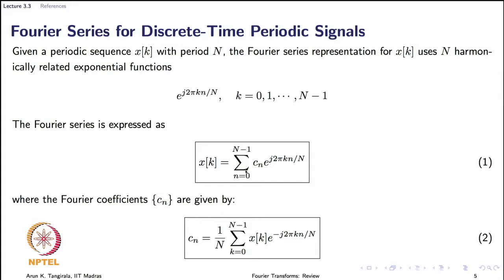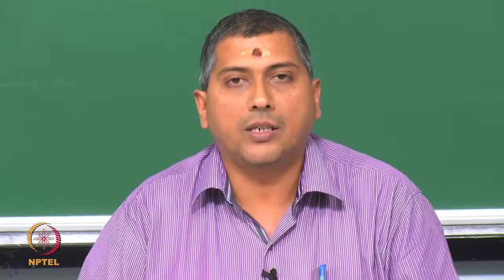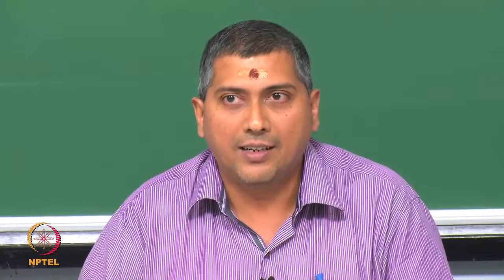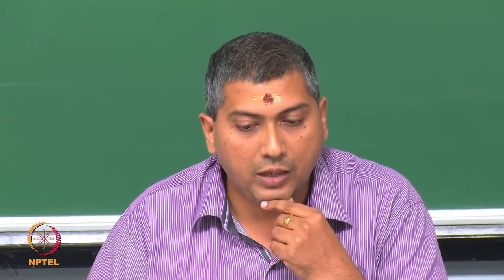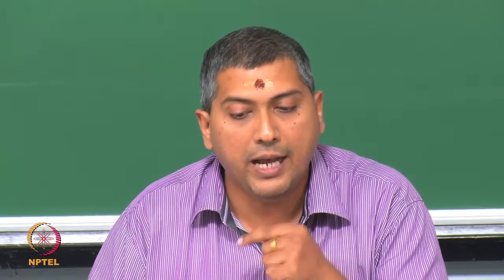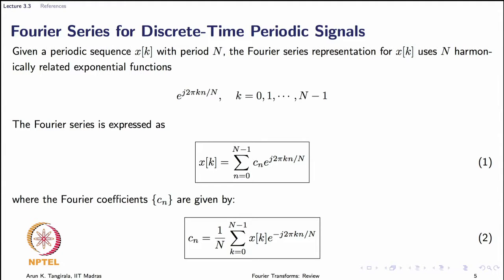Looking at the Fourier analysis and synthesis equations in more detail: the family of basis functions is now finite. This family is e^{j 2π k n / N}, where big N is the period. The index n runs from 0 to N minus 1, and the Fourier series is expressed in terms of these basis functions, while the Fourier coefficients are given by the corresponding analysis expression.